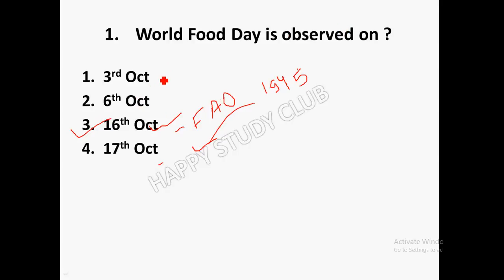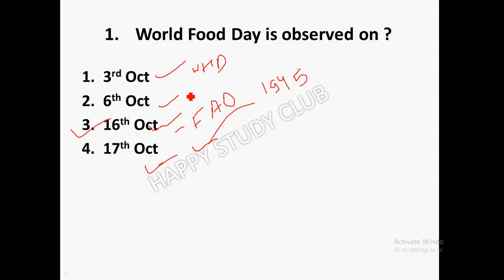On 3rd October, World Habitat Day is observed. On 6th October, World Wildlife Day is observed. On 17th October, International Poverty Day is observed. But the correct answer of this question is 16th October — World Food Day.